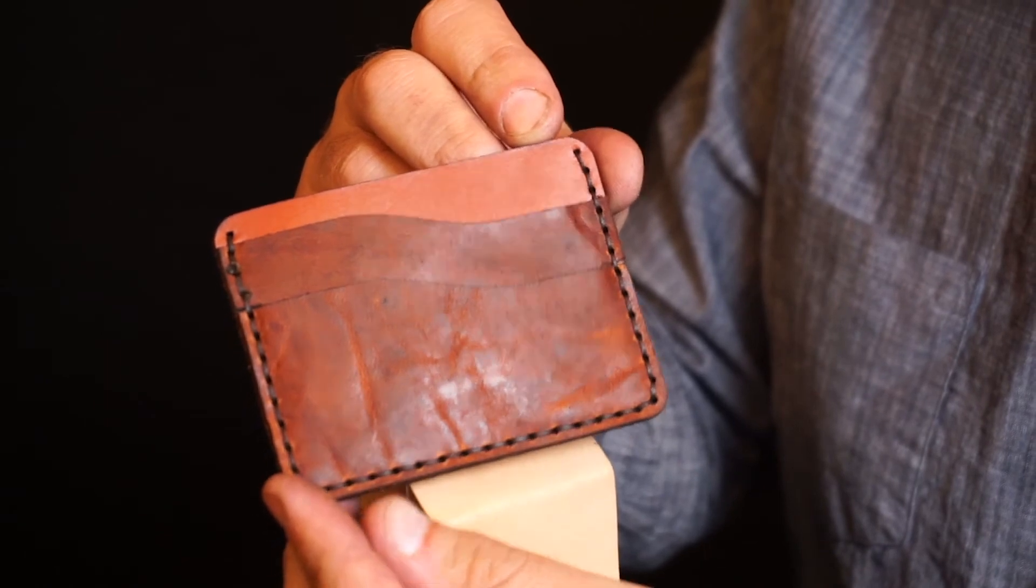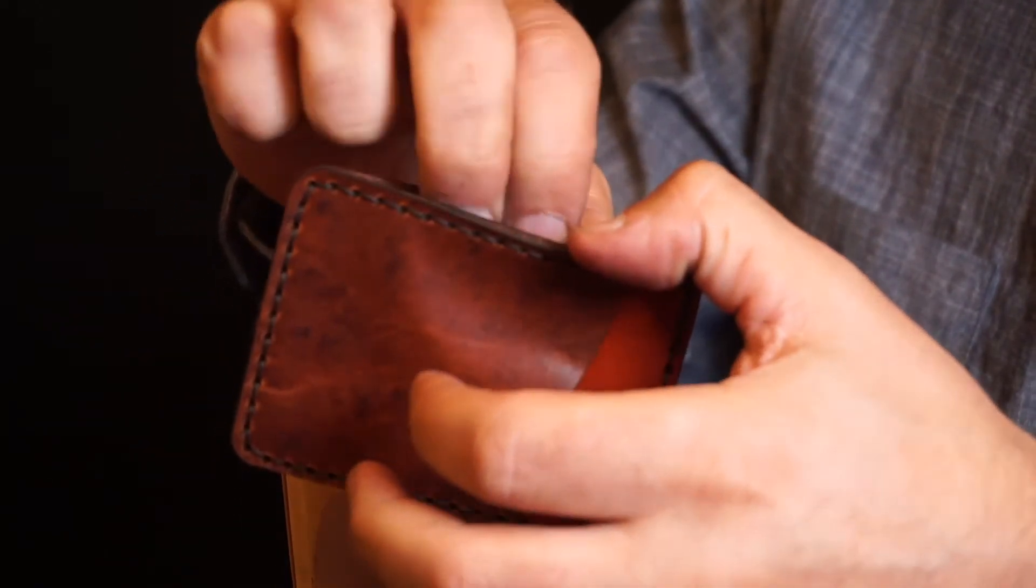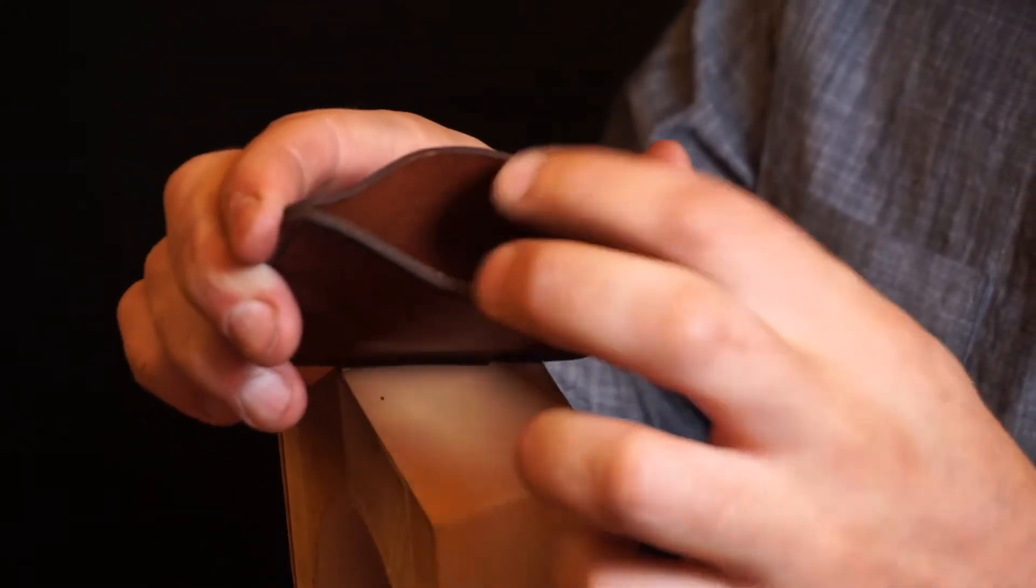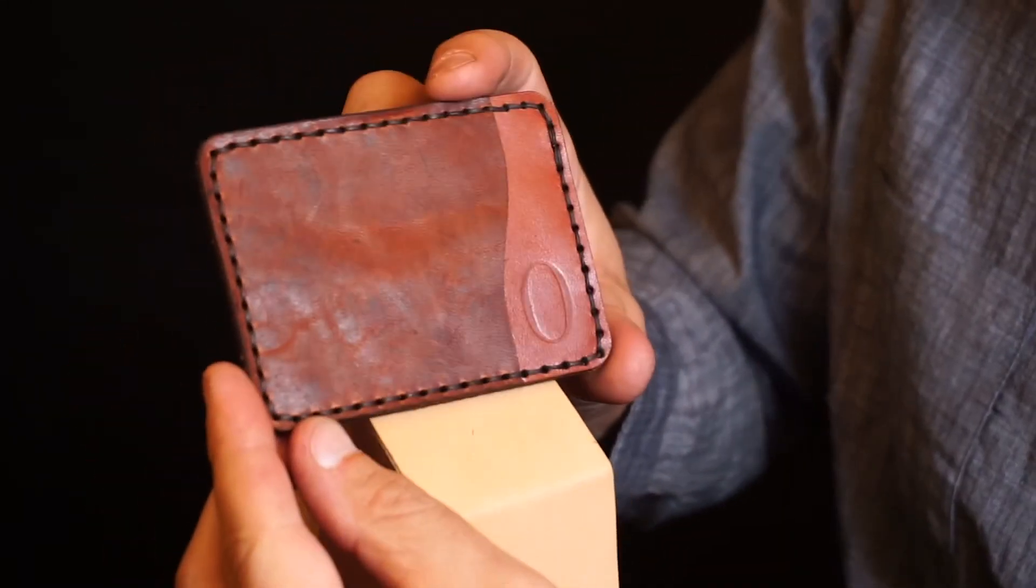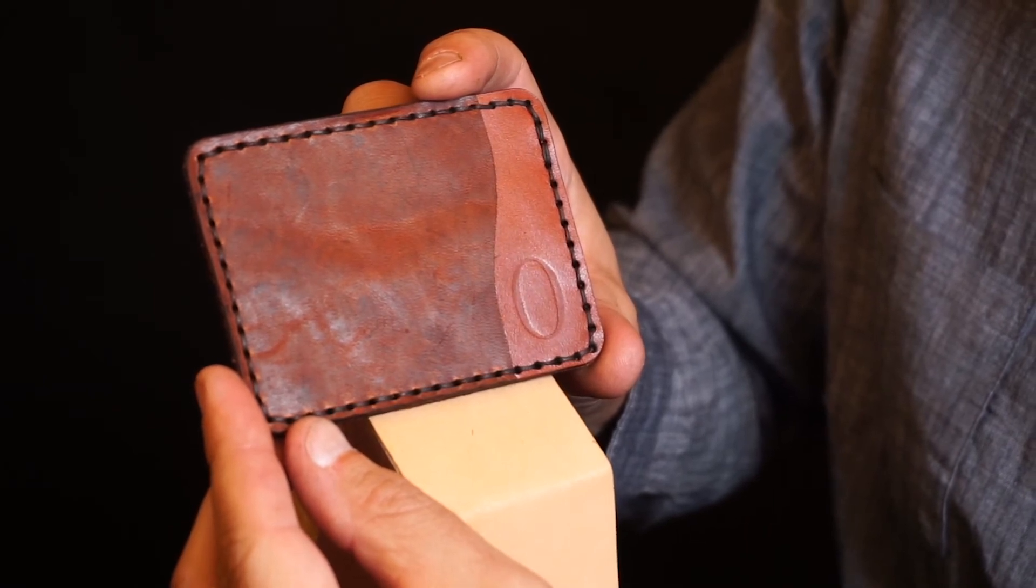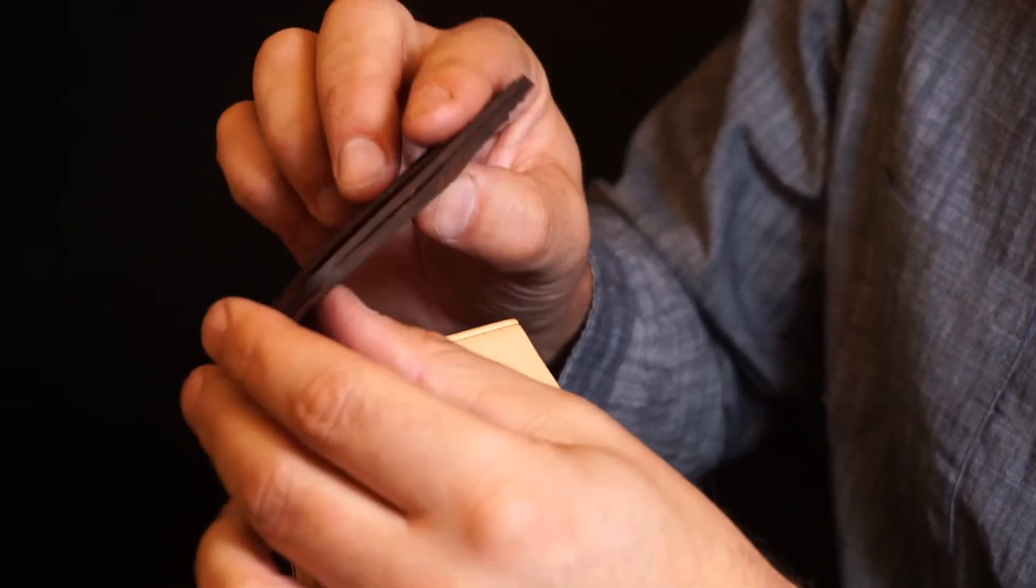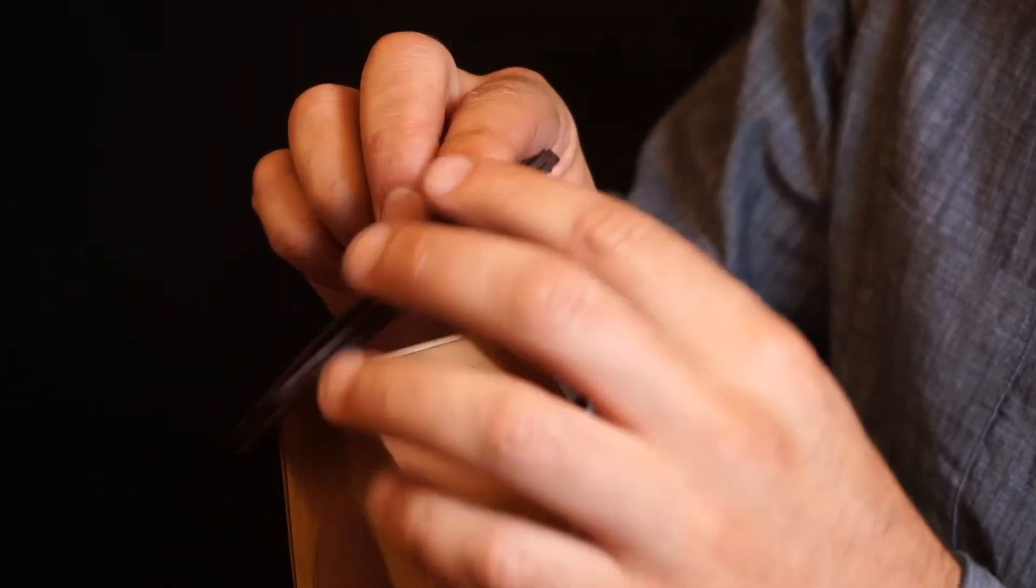And there it is. We have a finished wallet with three card pockets, as well as the hidden middle pocket. Now all that's left to do is to sand and burnish your edges if you prefer. These edges will burnish naturally over time with use, but we can help clean them up a little bit here first.